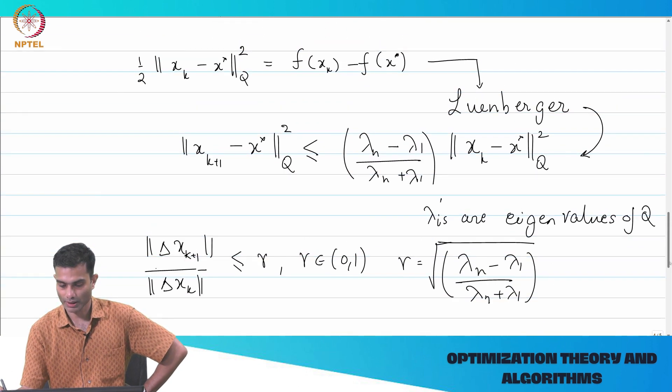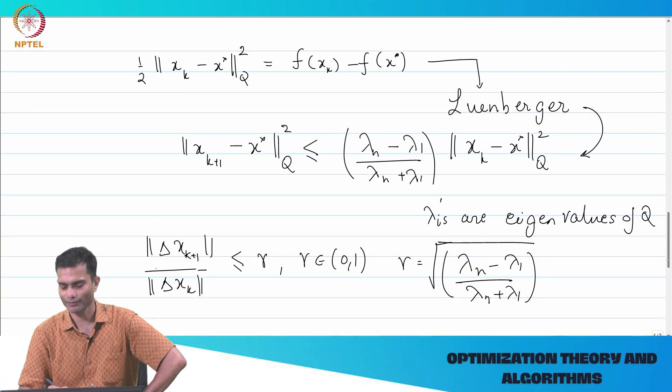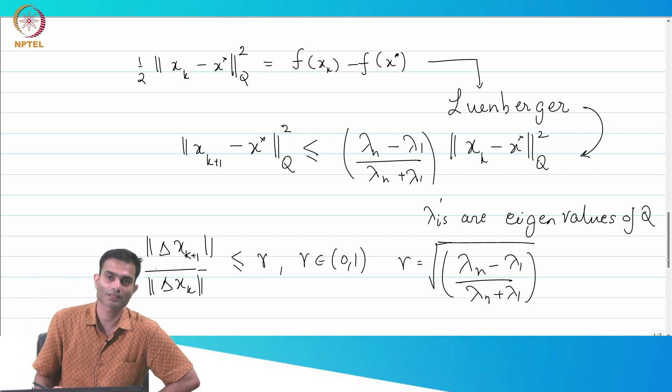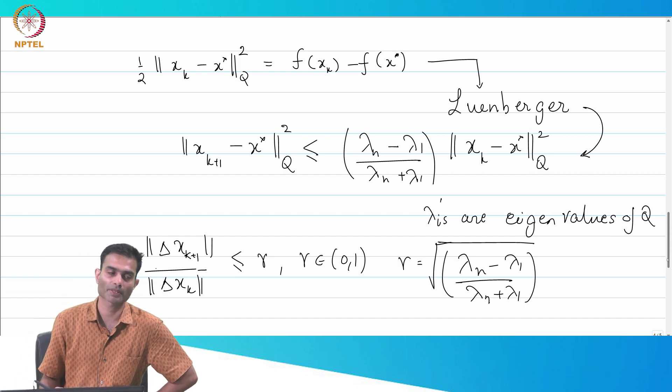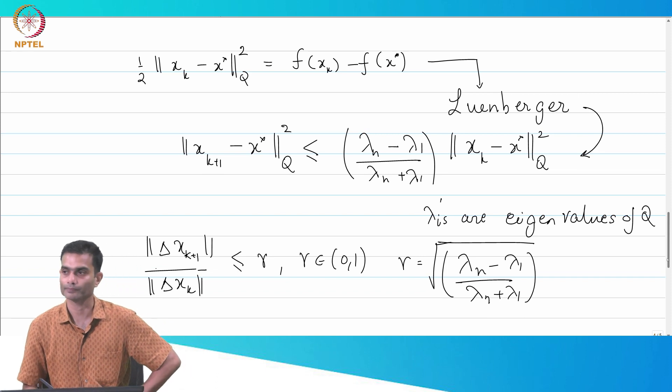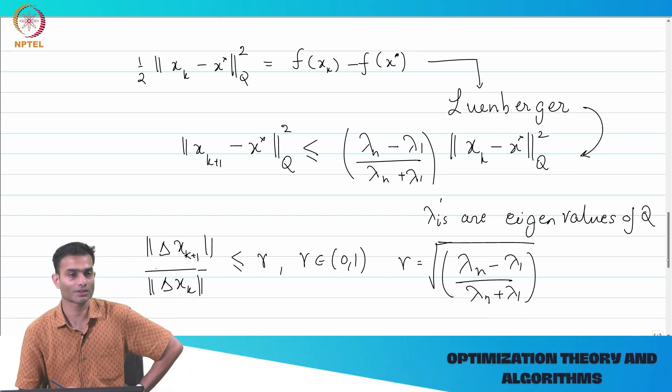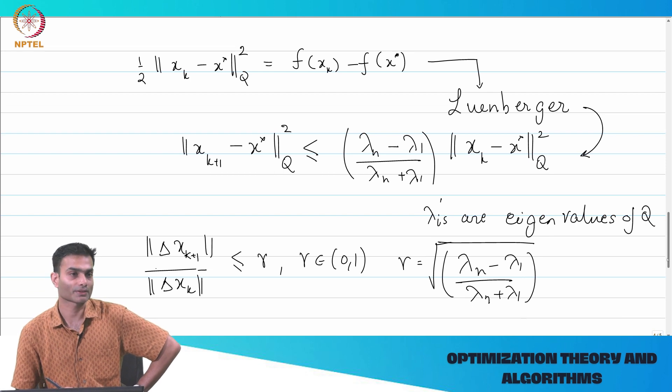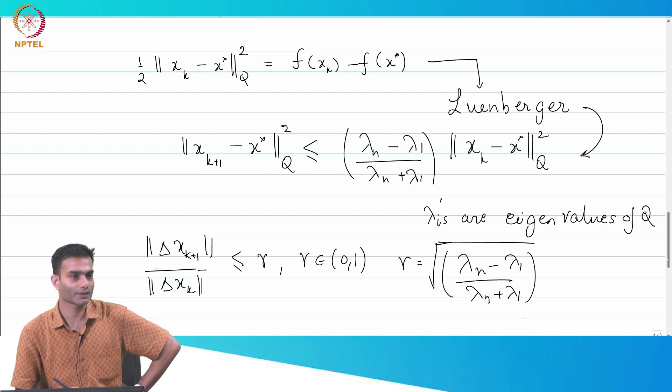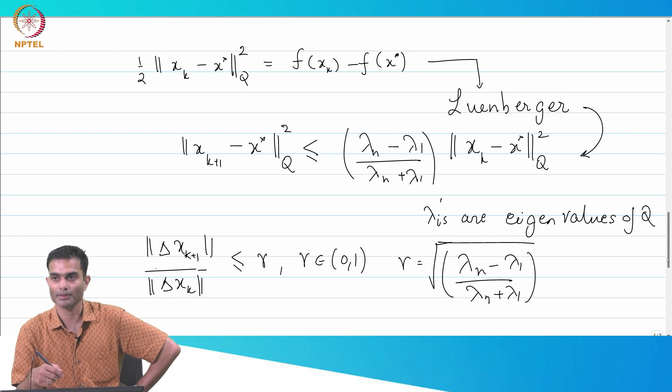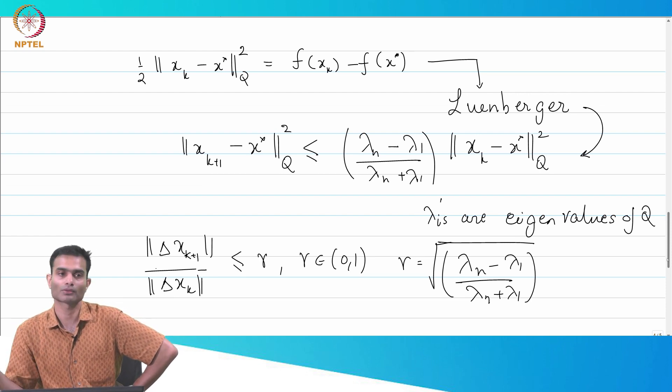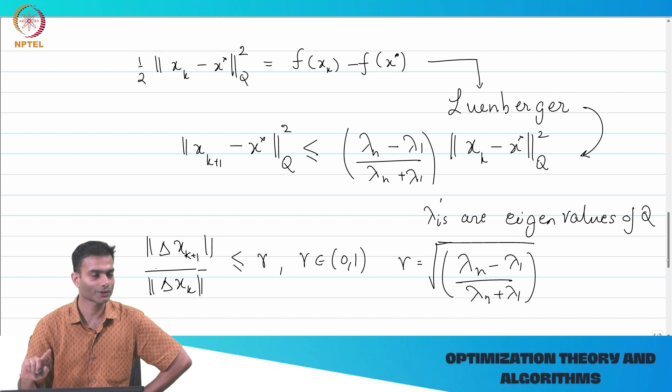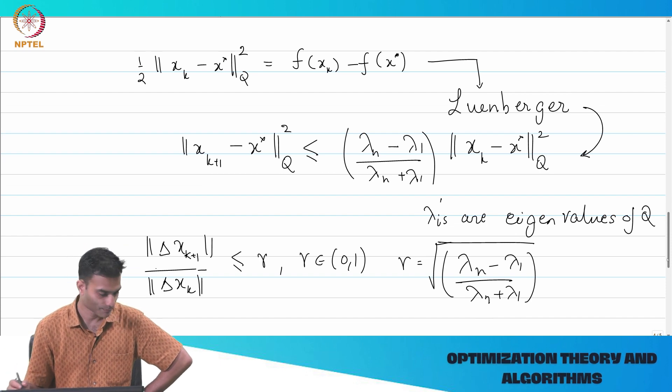Does it look like that? Does this expression that we have got, does it look like that? It does look like that. What is my r? Square root of this expression, right, because I've got the squares on both sides. So, r is equal to square root of this lambda n minus lambda 1, lambda n plus lambda 1. Again, just a quick linear algebra refresher, I've called these the eigenvalues of Q. If I call these the singular values of Q, would I be correct or incorrect? Correct, because for a positive definite matrix, which is also symmetric, the eigenvalues and the singular values are identical. So, I can talk in either terms.